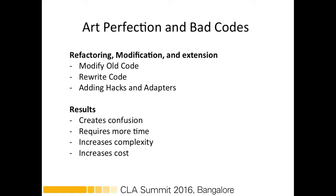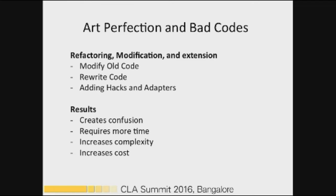Let's compare the search for artistic perfection with bad code. When an artist does not use any methodology, they create art and are satisfied with it based on their own perception. But when the artist visits a gallery or sees the work of other artists, they realize the technique could have been better and the art could be much improved. Bad code is similar to this search for art perfection.